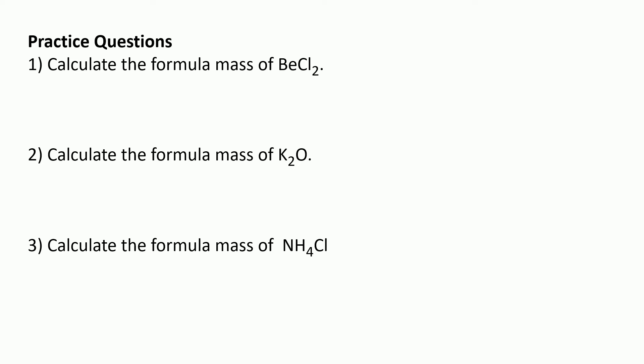In question one, beryllium has a mass of 9, and each chlorine atom has a mass of 35.5. We need to remember there are two chlorine atoms, and that total comes to 80. So the formula mass or MR for BeCl2 is 80. It's important that you show your working out. Just in case you slip up with your calculator, you will still get a mark for showing correct working.